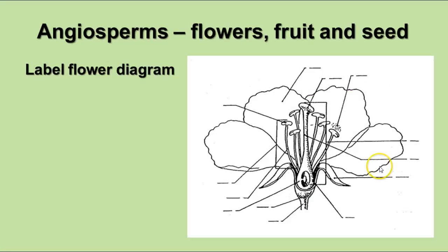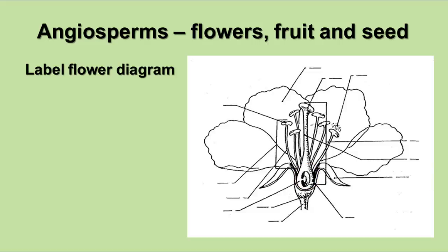The angiosperms have flowers, fruits, and seeds. You should be able to label a flower diagram and recognize that the stamen is the male part of the flower, with the anther producing the pollen and the filament holding it up. The pistil or carpel is the female part of the flower, containing the stigma — which is sticky — the style, which connects the stigma to the ovary, and the ovary containing the ovule. The pollen grains are the male gametophyte and the ovules are the female gametophyte. In seed plants, the gametophytes are very reduced in size and the sporophyte is the most recognizable form of the plant.